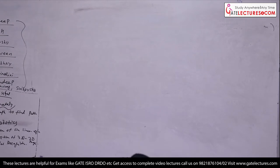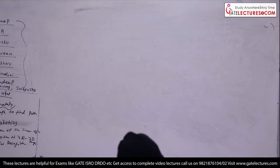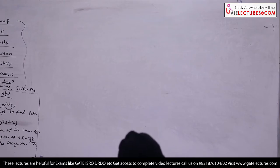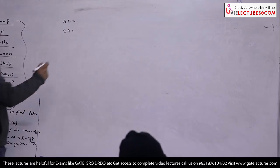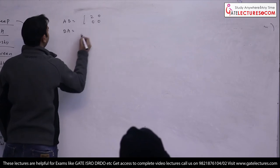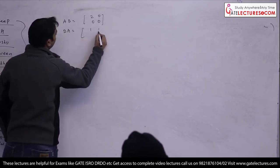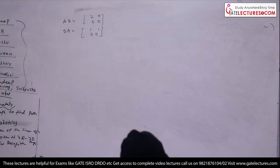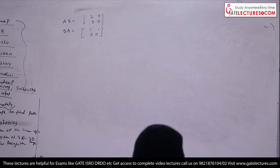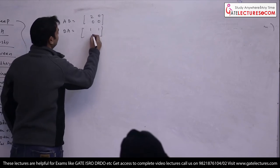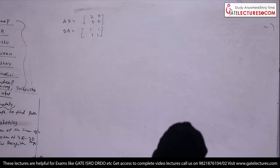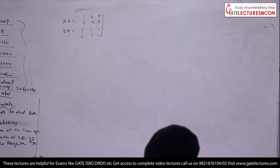Now, A is a 2×2 matrix: 1 1 0 0, and B is another 2×2 matrix: 1 0 and 1 0. You need to find AB and BA. AB gives 2 0, 0 0. BA gives 1 1, 0 0, 1 1. So simple multiplication — do not put any wrong elements.